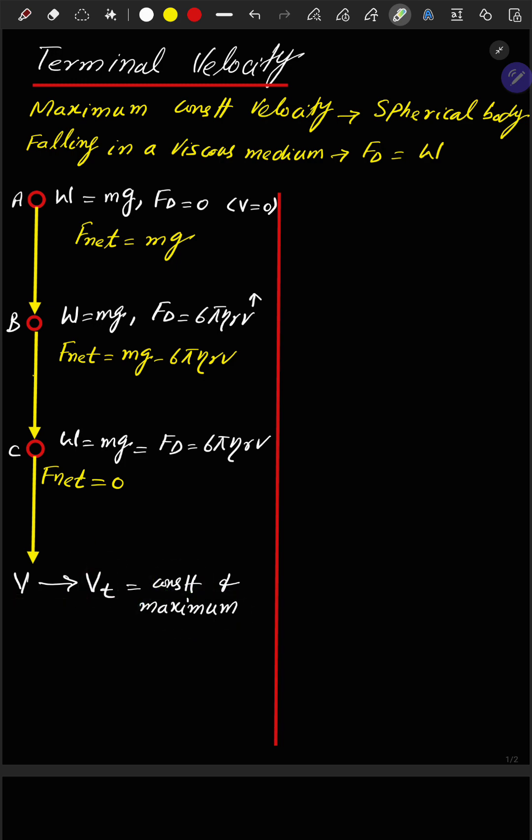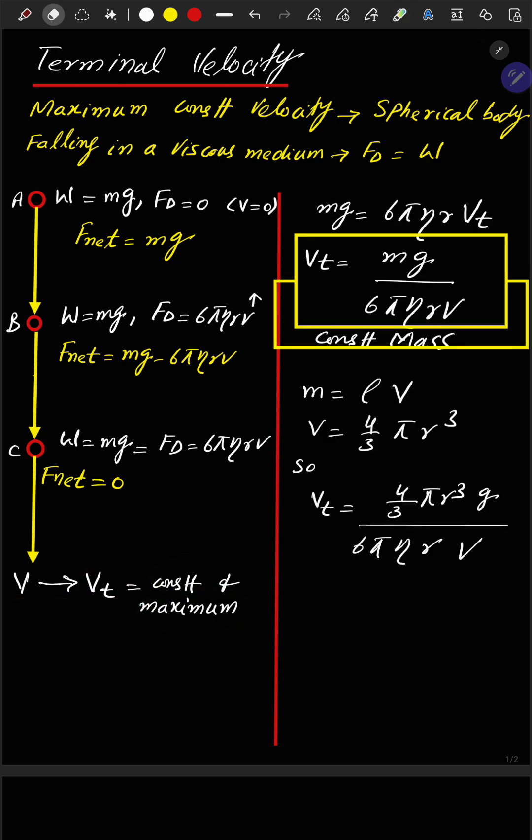This can be written by equating these two terms to get the terminal velocity equation: vt = mg/(6πηr), where m is the mass, g is the gravitational acceleration, 6π is the constant, η is the viscosity, and r is the radius of the spherical body.